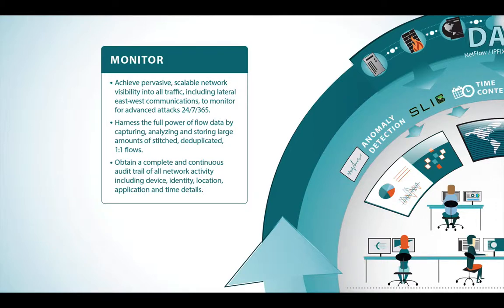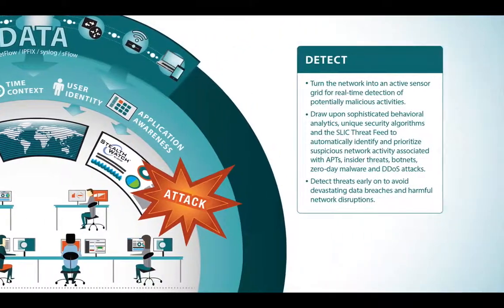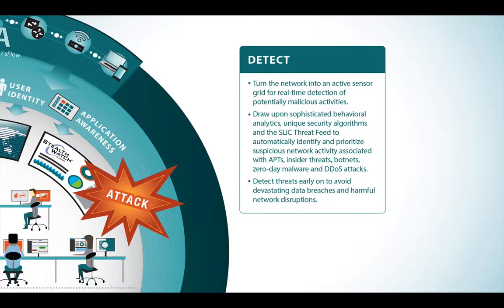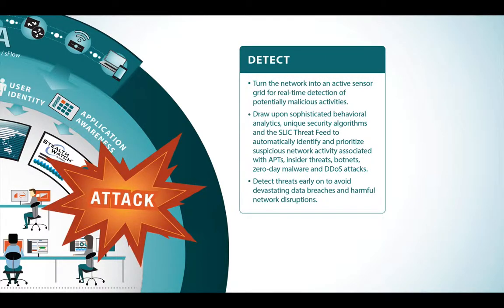Detailed information in the form of identity, location, time and date, and application awareness enables security teams to rapidly pinpoint potential problems. Your network is a sensor, and with StealthWatch's unique security algorithms and continuously updated threat feeds, real-time detection of security incidents is swift and thorough. Early detection of indicators of compromise help avoid breaches that cost organizations millions in data loss and damaged reputation.